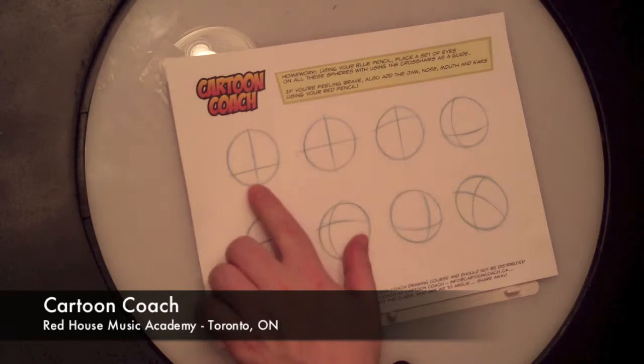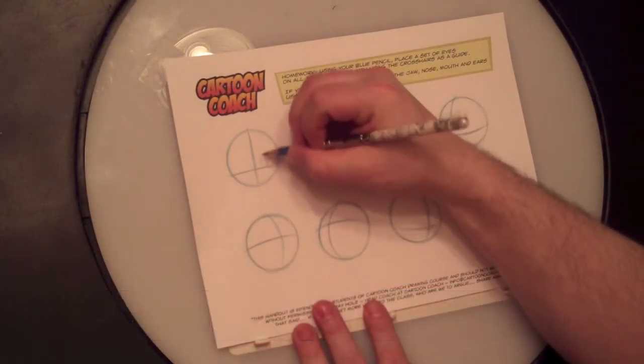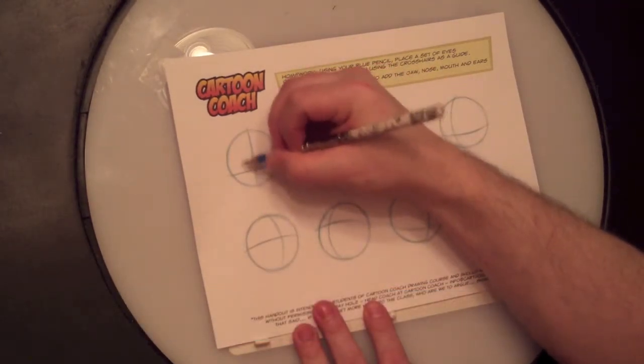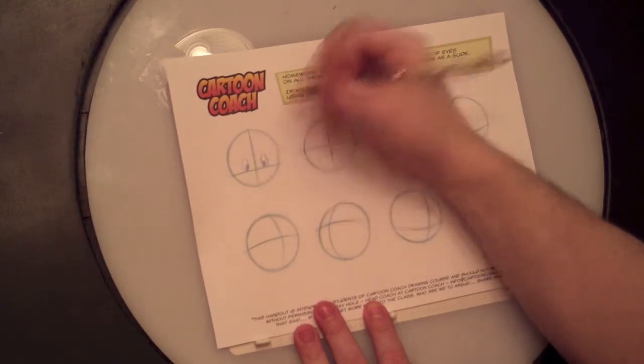The first one we started with was one looking straight at you. So your eyes are going to be one here and one there, and you can throw in the pupils to make it look a little bit better.